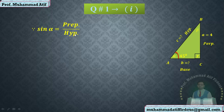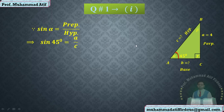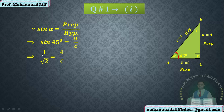For example, sine alpha equals perpendicular over hypotenuse, which is a over c. We write directly: sine 45° = a/c, and sine 45° equals one over root 2. So a is 4, and cross-multiplying gives c = 4 times root 2. We have used two known terms to find the third.